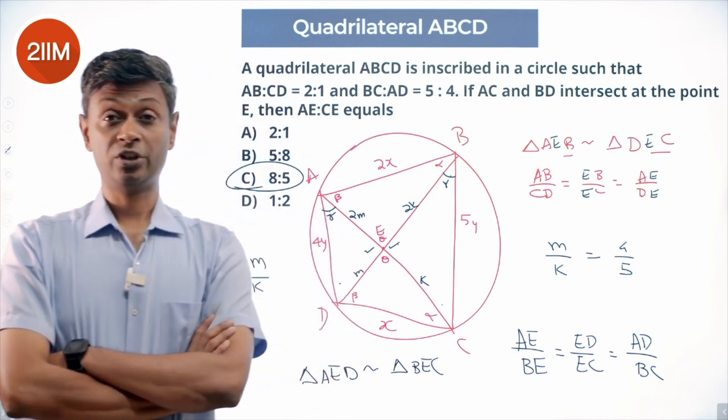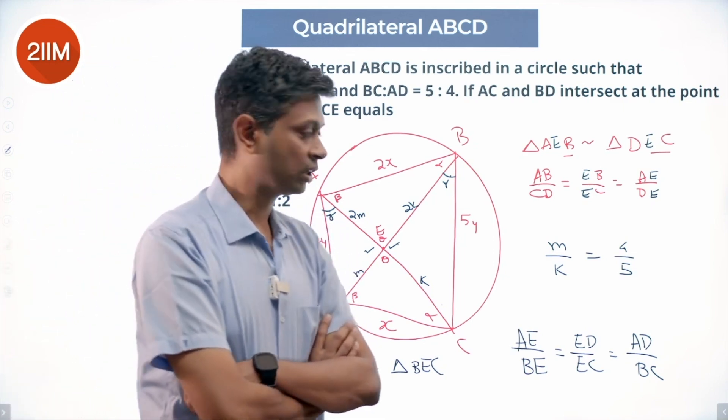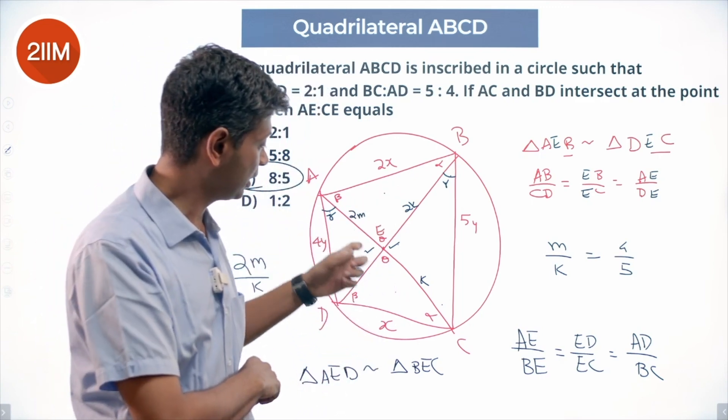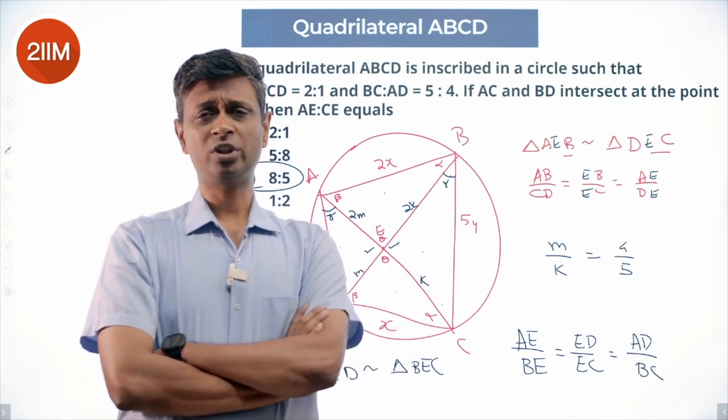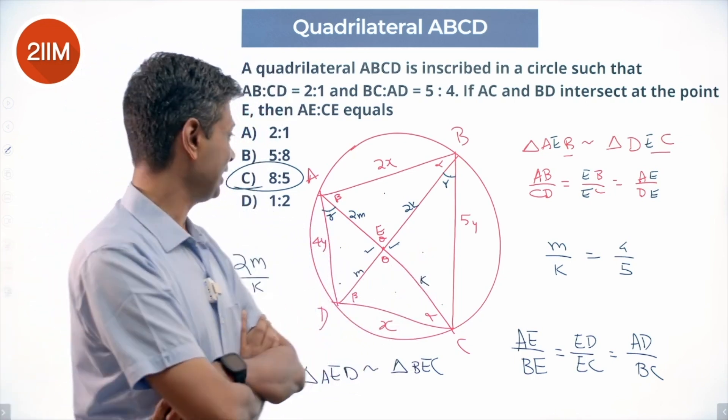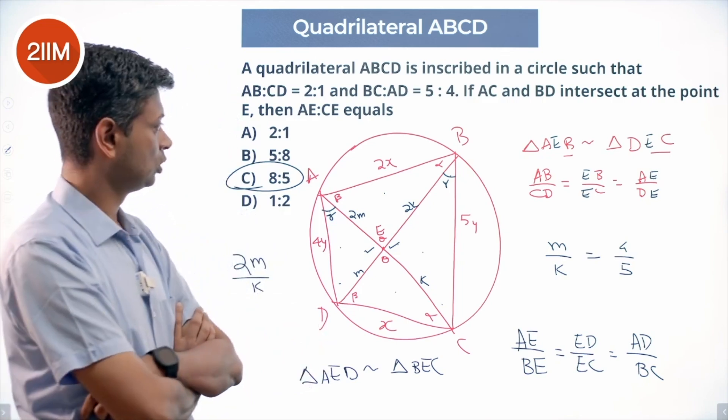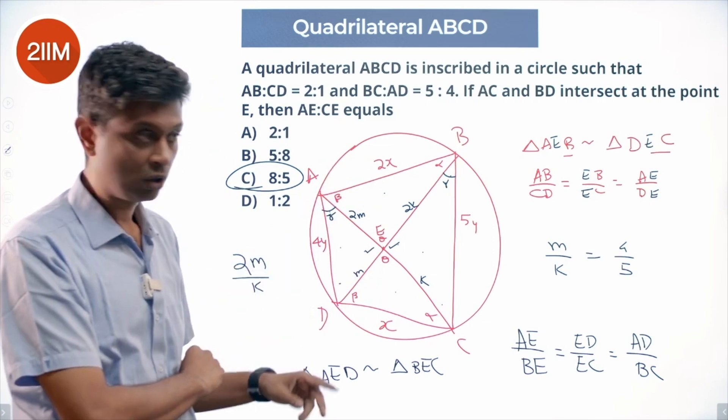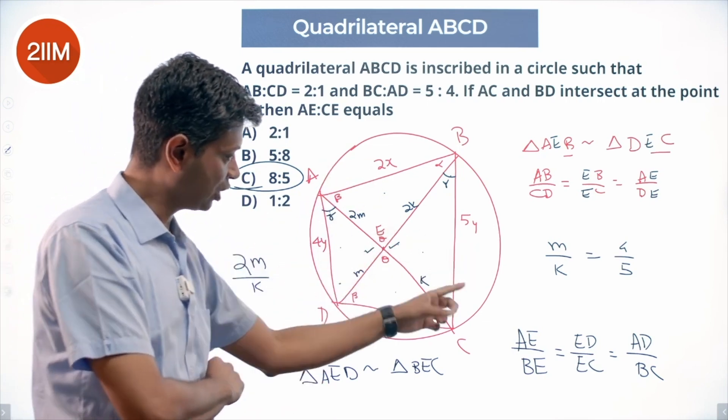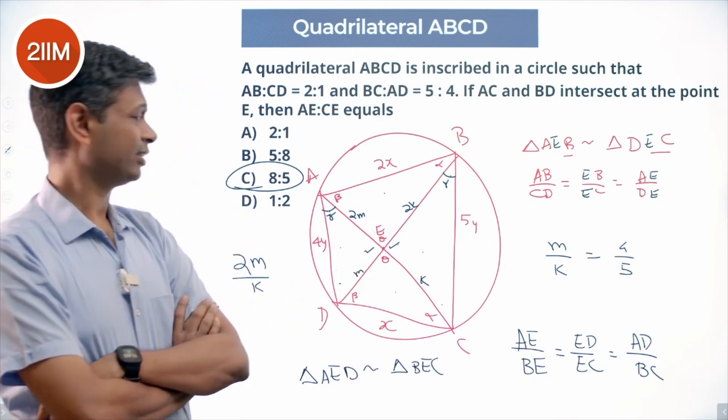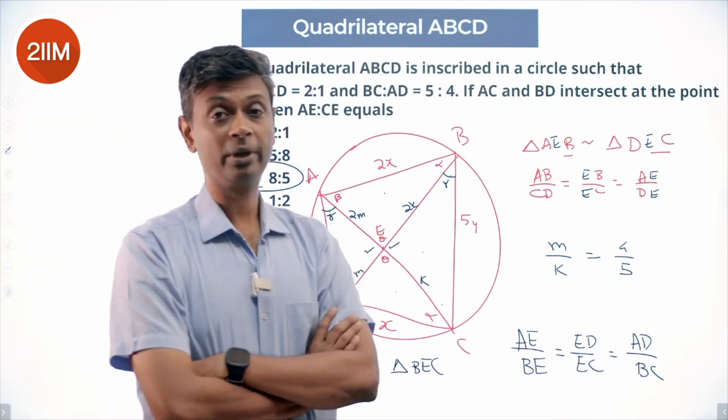Beautiful, challenging question. We have a cyclic quadrilateral with diagonals intersecting in between. These two are similar, these two are similar. We use that and manipulate in different ways to find all kinds of equations. The answer is 8:5. We know M/K = 4/5, so 2M/K = 8/5.